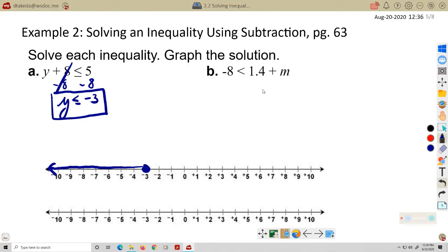Example 2B, negative 8 is less than 1.4 plus M. Again, the side with the variable, I want to isolate that variable. So I'm going to subtract 1.4 from both sides. That leaves me M on the right, negative 9.4 on the left. So I know my boundary is negative 9.4, which is going to be in here somewhere. I know it's going to be an open circle because there is no equal bar. It's not equal.